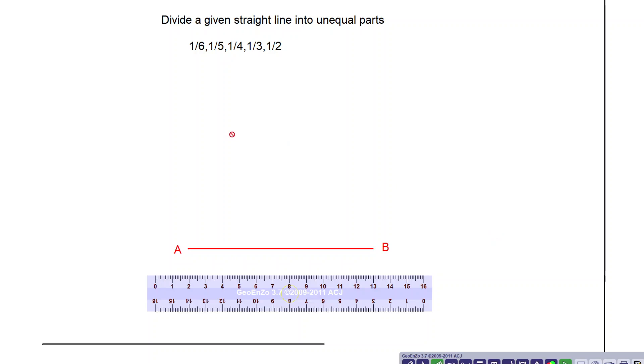In this lecture, you want to divide a given straight line into unequal parts. Unequal parts, for example, 1 upon 6, 1 upon 5, 1 upon 4, 1 upon 3 and 1 upon 2. These are some unequal proportions that we have learned.